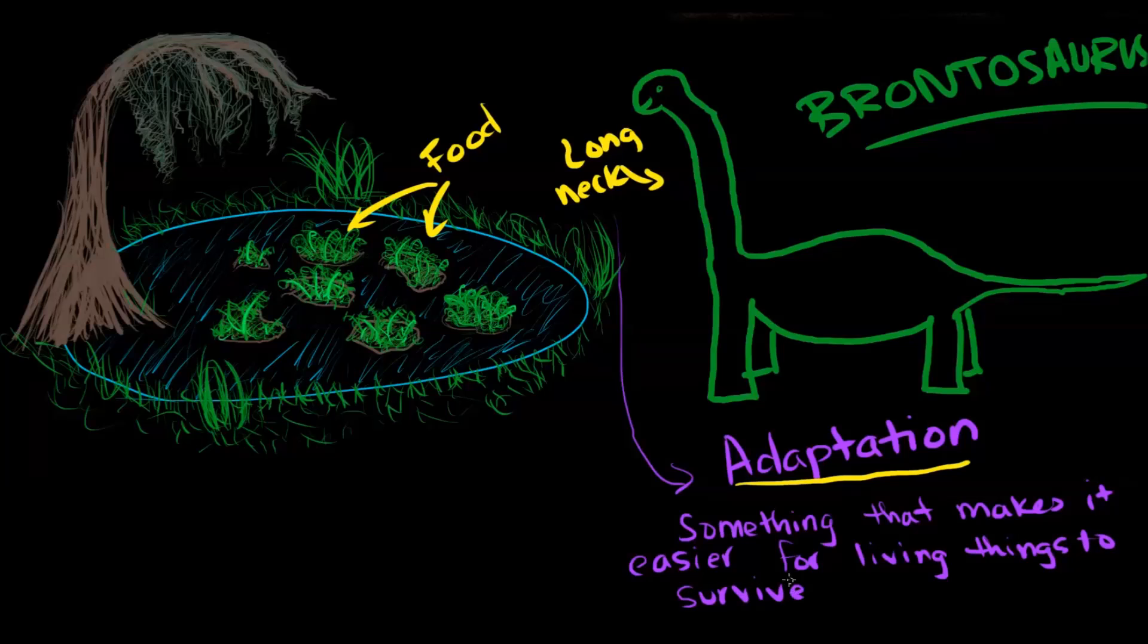So a couple more examples. You might think of the sharp teeth and claws of a lion that help it catch prey. You might think of the nice, beautiful colors of flowers that help them to attract pollinators. You might think about the thick fur of a polar bear that helps it live up where it's really, really cold. So now the question is, how do adaptations like a long neck come about?